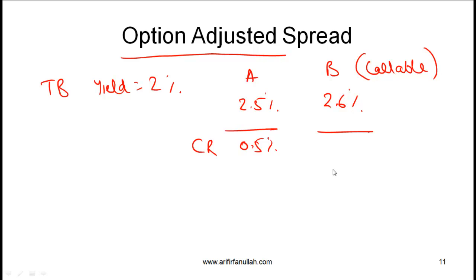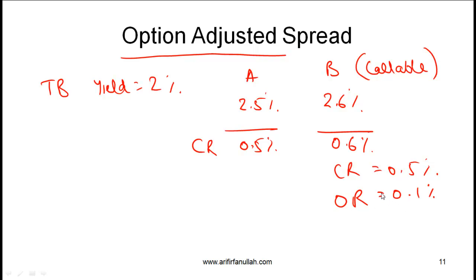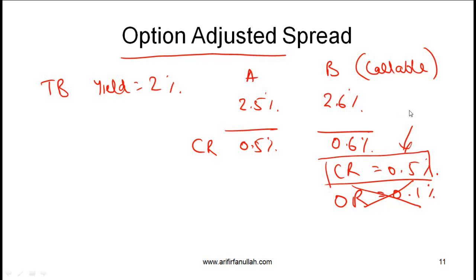The extra yield of 0.6% for bond B is explained by both credit risk and option risk. The credit risk component, based on the comparable bond A, is 0.5%, so the option risk is 0.1%. The option-adjusted spread for bond B is the spread over the Treasury bond when we remove the impact of the callable option — so the OAS is 0.5%. For bond A, which has no option, the spread of 0.5% is the same as the option-adjusted spread since there is no adjustment needed.